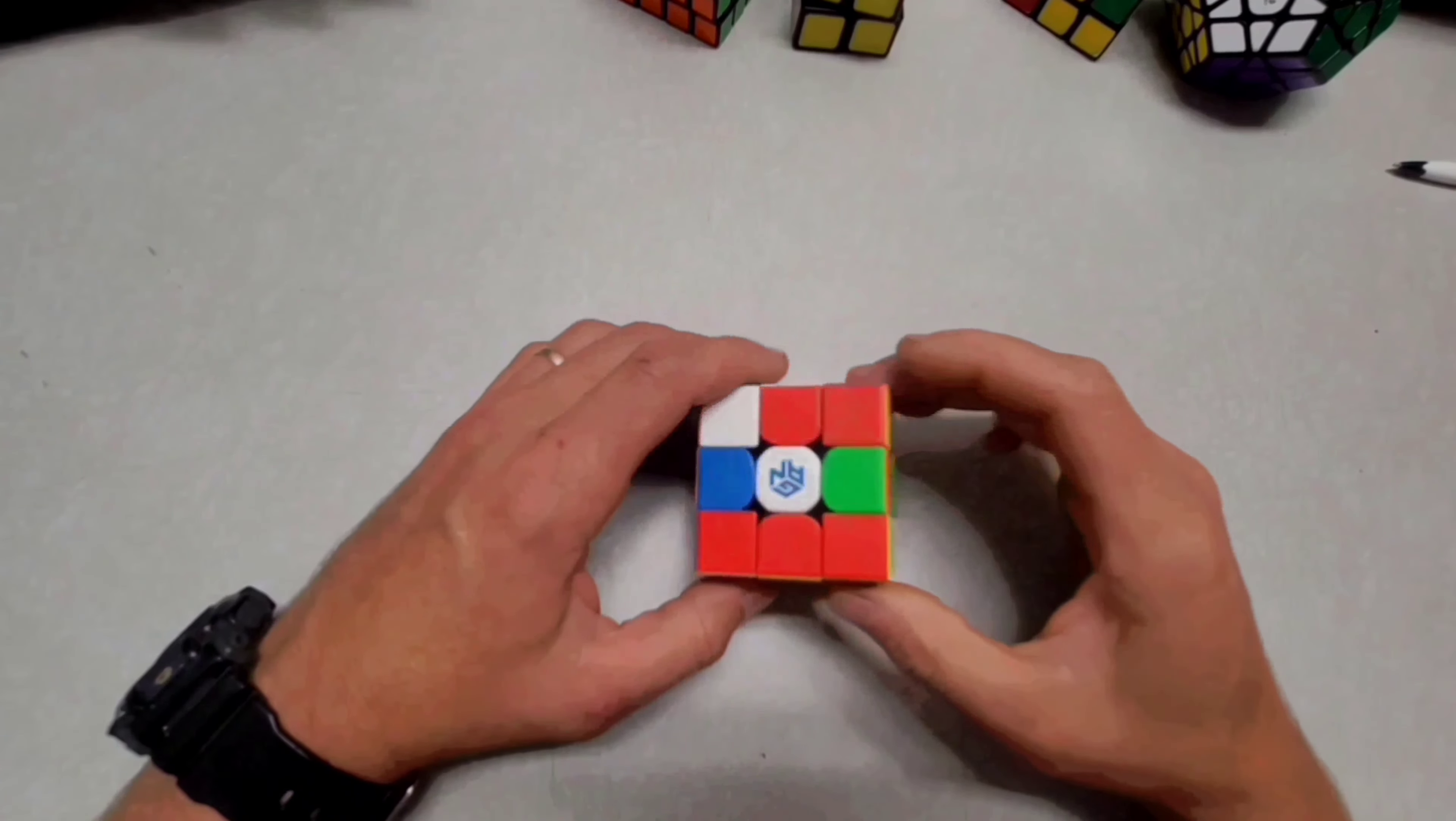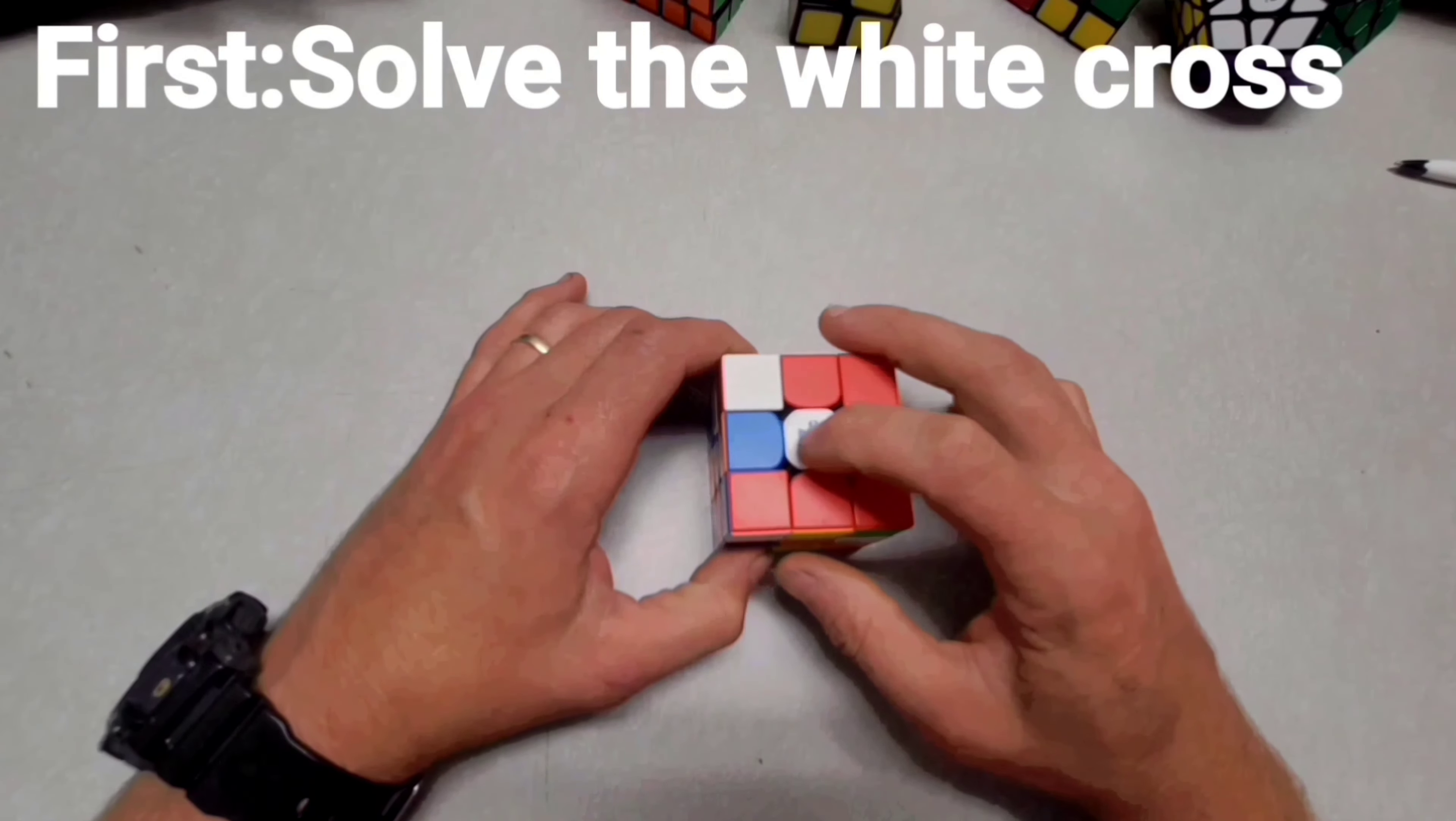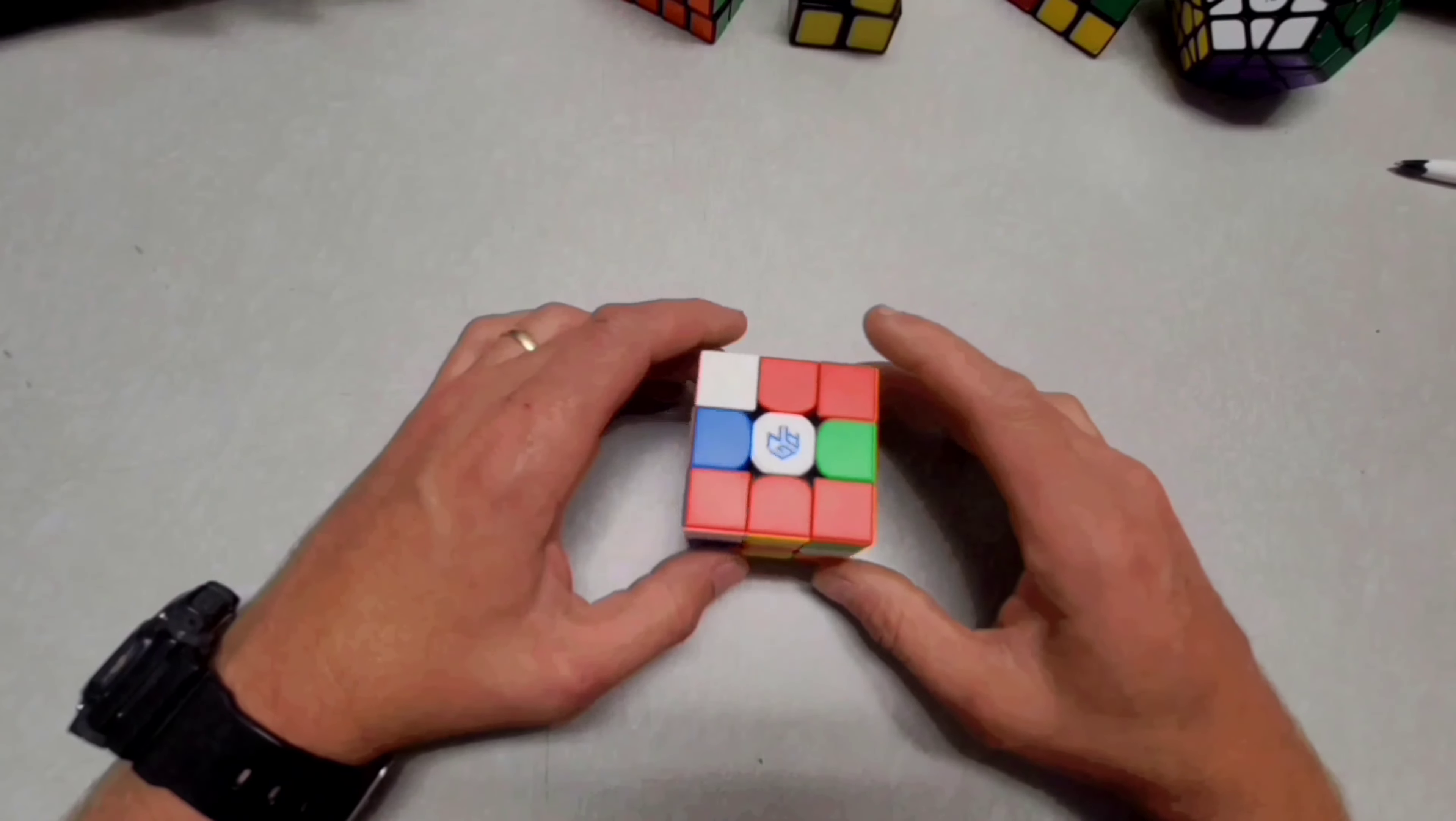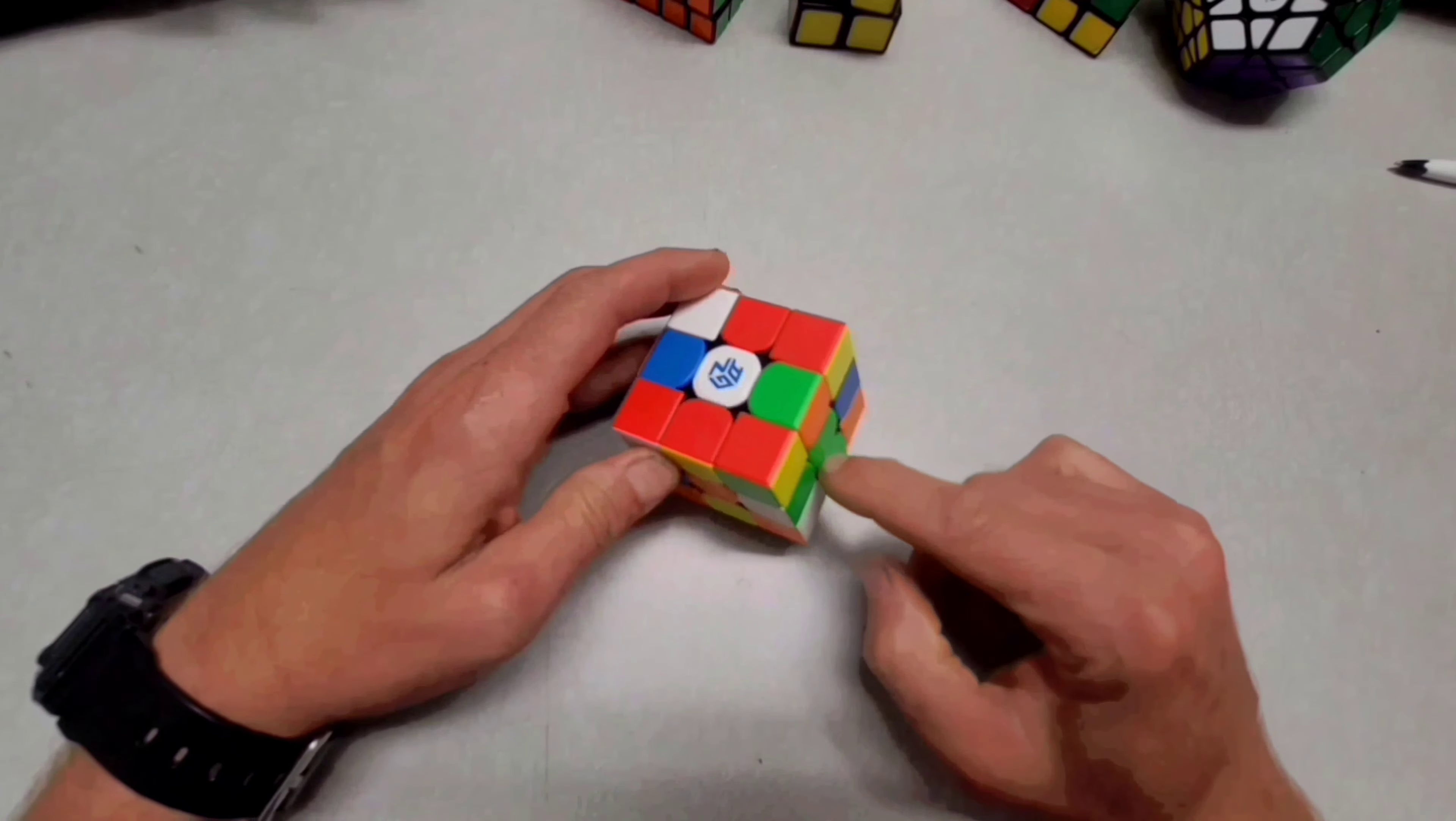Alright, the very first thing you're going to do on the 3x3 is solve the white cross. So this is the main part. And I always solve for white first. So you can solve any color you want to, but most cubers do white side up. That's just what we do.